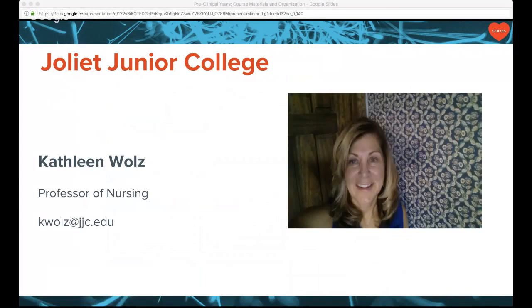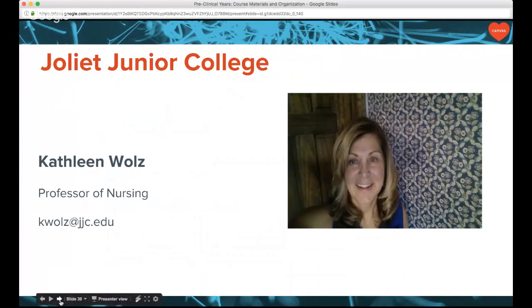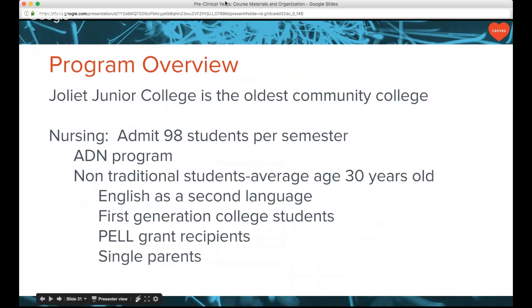I am so impressed to be in such a prestigious group. We are the only community college represented. We are the oldest community college in the nation and admit 98 students per semester, so we are a huge program. We are a one-plus-one program, which means we have an LPN component and an RN component. We typically have non-traditional students — the average age is 30 years, varying five or six years either way, with students as young as 18 and as old as 65.